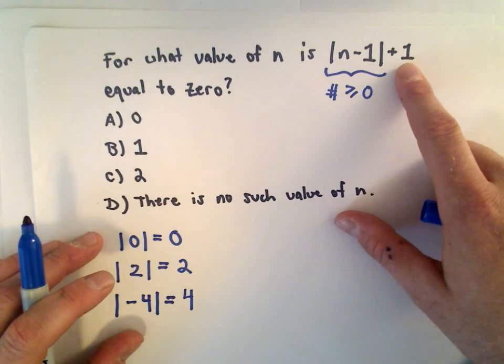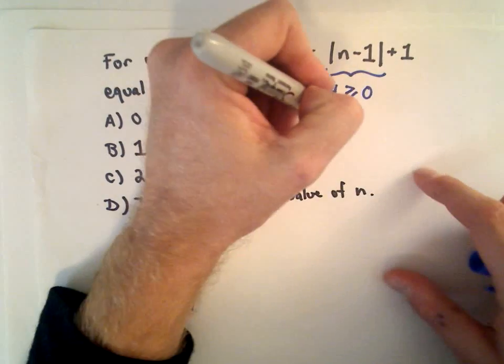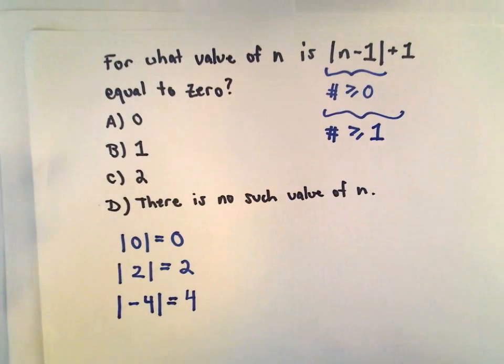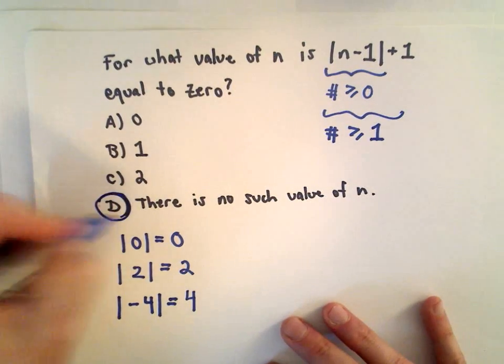Okay, so I'm going to get something that's 0 or larger. Well, if I add 1 to that, if I add 1 to that value, it's going to give me a number that's greater than or equal to 1. So in this case, there would be no such value of n.